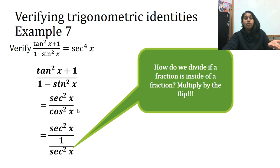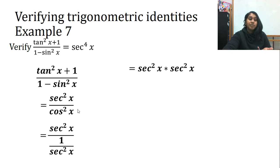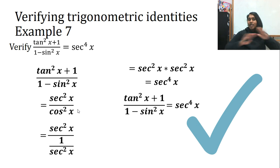So how do you divide a fraction? You're actually multiplying by the reciprocal of the denominator. Flip the bottom. I flip the bottom and I end up with this. If I have two secants multiplied by two more secants, I actually have four secants. So we verified.